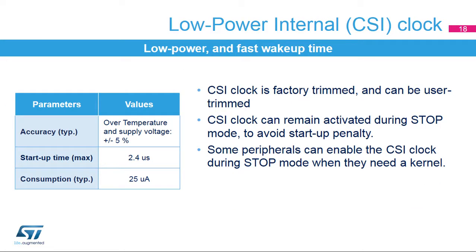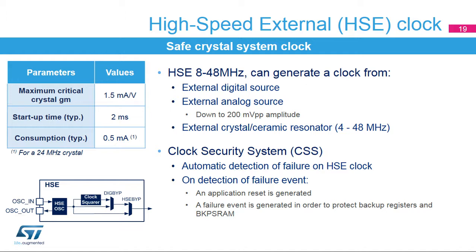The low-power internal oscillator is a 4 MHz RC oscillator with an accuracy of 5% and a fast wake-up time. The CSI clock is trimmed during production testing and can also be user-trimmed. The CSI clock can remain enabled when the system goes to stop mode to speed up wake-up time. Some peripherals such as I2Cs and UARTs can request activation of the HSI clock in system stop mode. If the CSI clock is disabled, the RCC automatically enables it and provides the clock to the requesting peripheral.